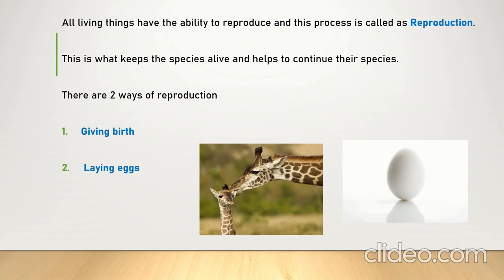All living beings have the ability to reproduce, and this process is called reproduction. There is a living being on this earth and it has the ability to produce a living being of the same kind. Suppose there is a giraffe — it can produce another giraffe. A polar bear can produce another polar bear. A female human can produce a child, who is also human.